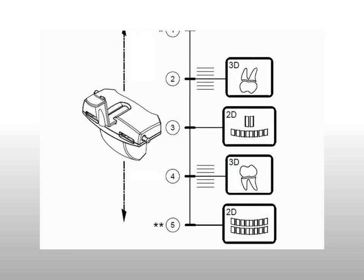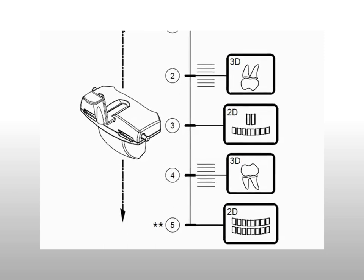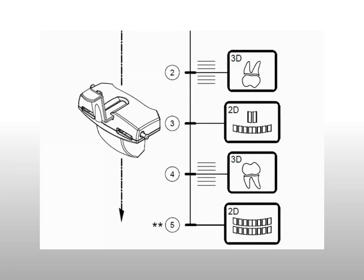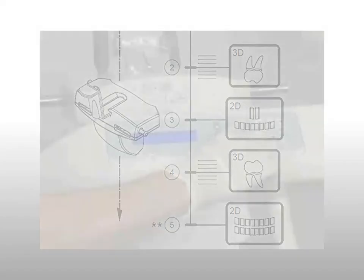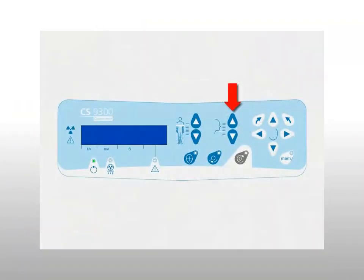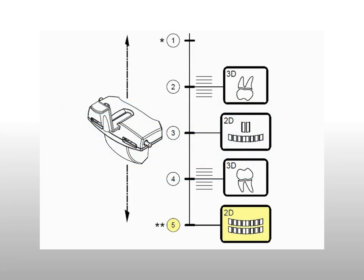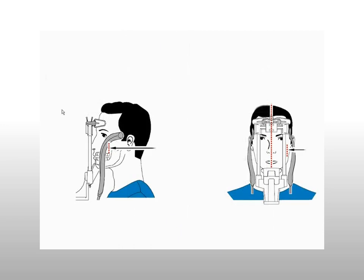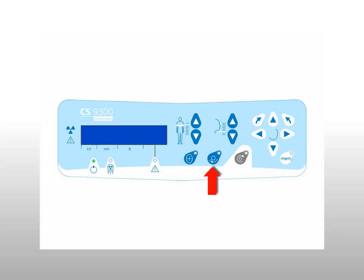The positioning indicators show the height that the chin rest base must be positioned before the patient enters the unit. For large field of view exams greater than 5x5, use the 3D head adjustment button to raise the chin rest to the highest position of the chin rest base — this is a beginning point and can be adjusted with the patient in the unit using the 3D field of view laser as a guide. Next, select the target button on the control panel to move the center of rotation to the area of interest for the scan.